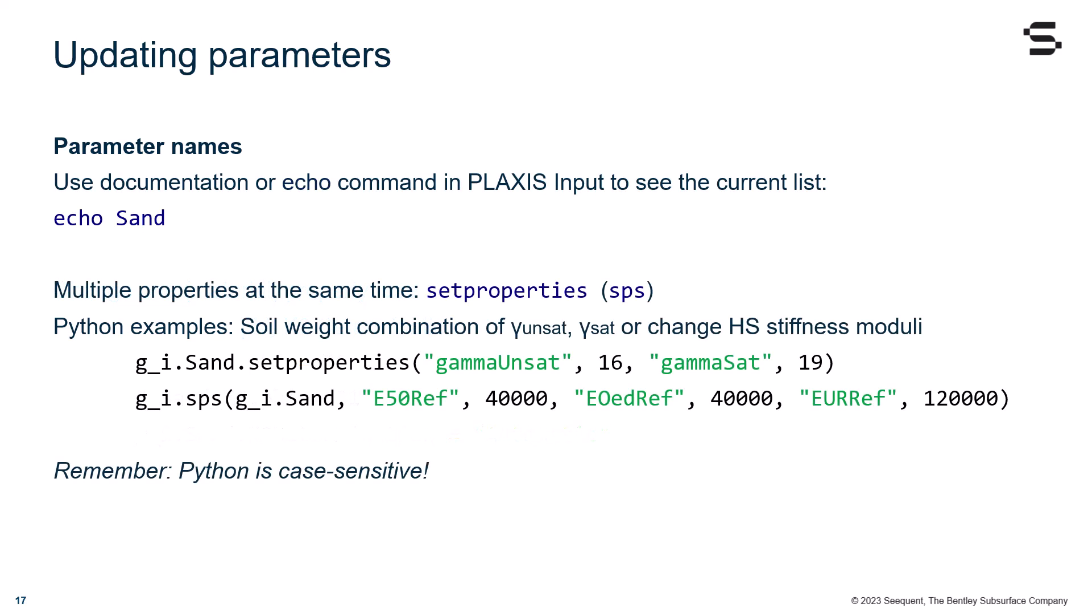When needing to edit multiple properties at the same time, you can use the setproperties command, or in short, sps. Let's see two Python examples considering a soil unit weight combination of gammaUnsat and gammaSat, or the hardening soil stiffness moduli.